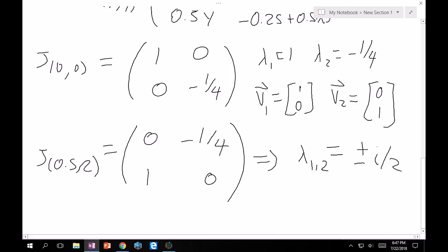So for the first one, for the origin, clearly it's a saddle, right? So we'll write that up here. And then for down here, plus or minus i over 2, that is going to be a stable center.